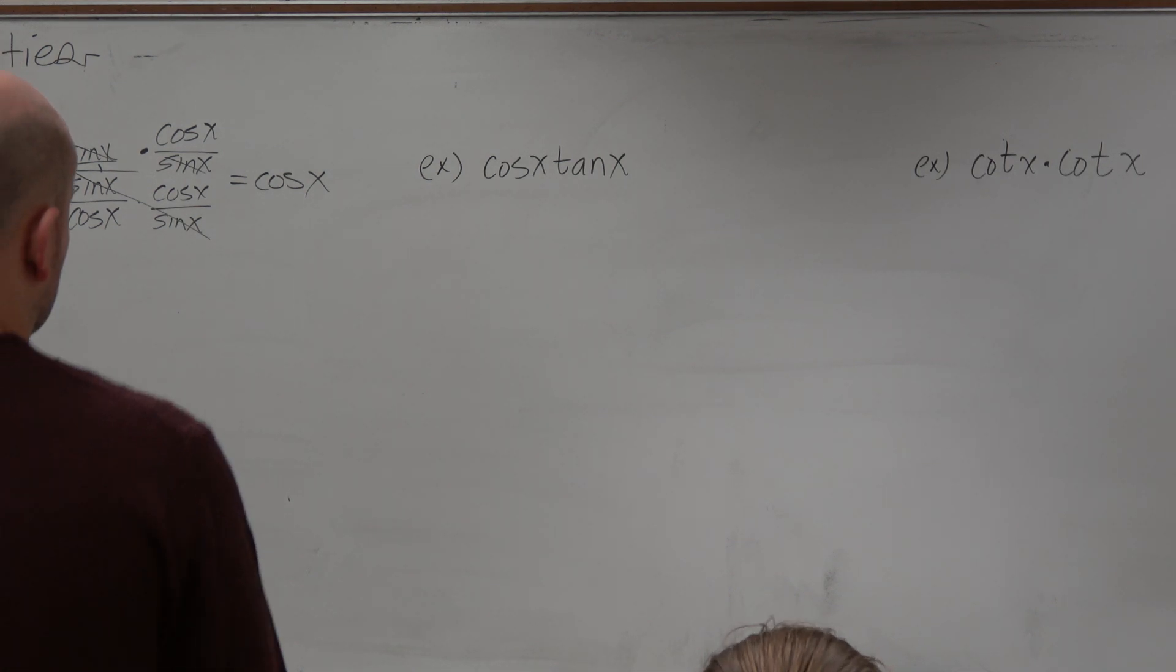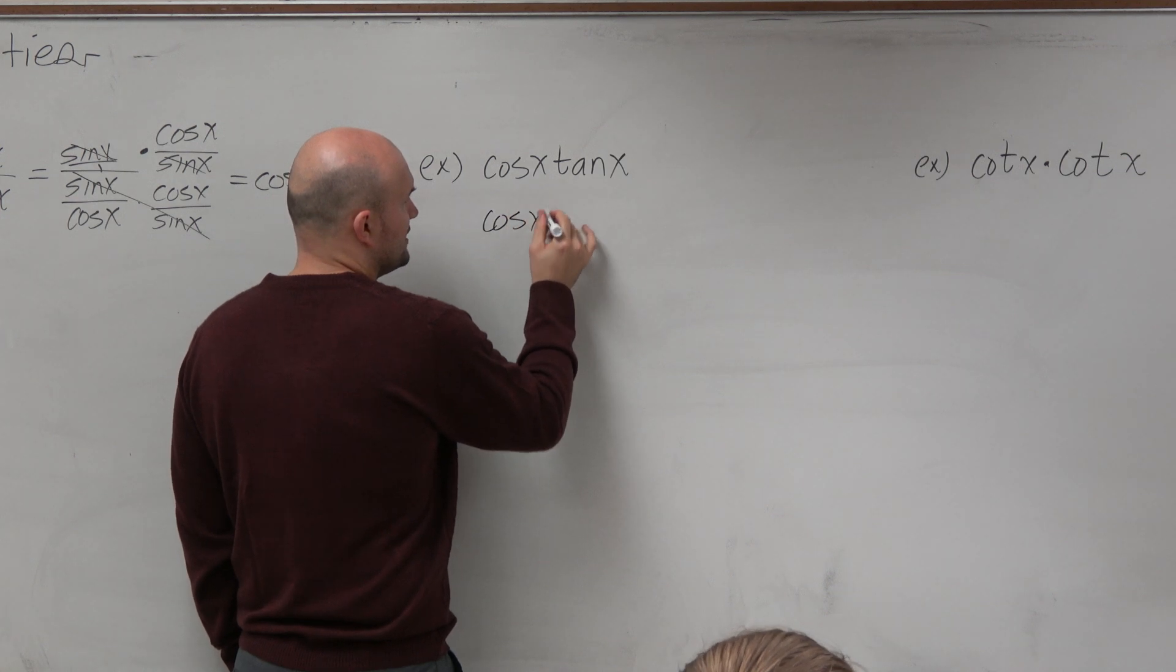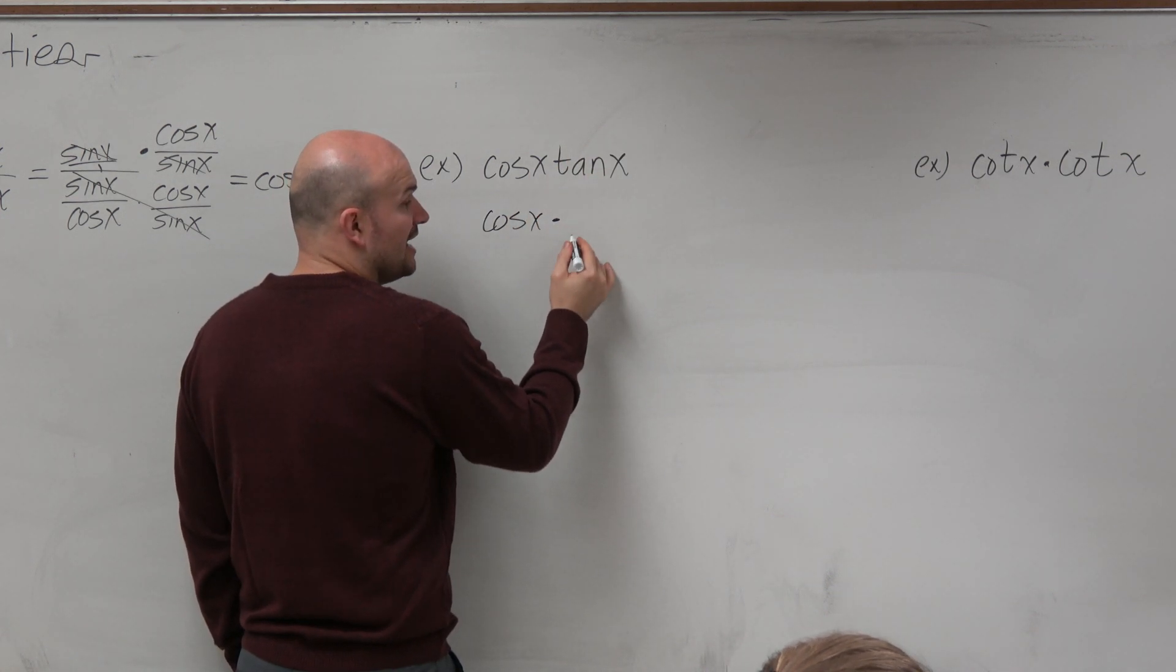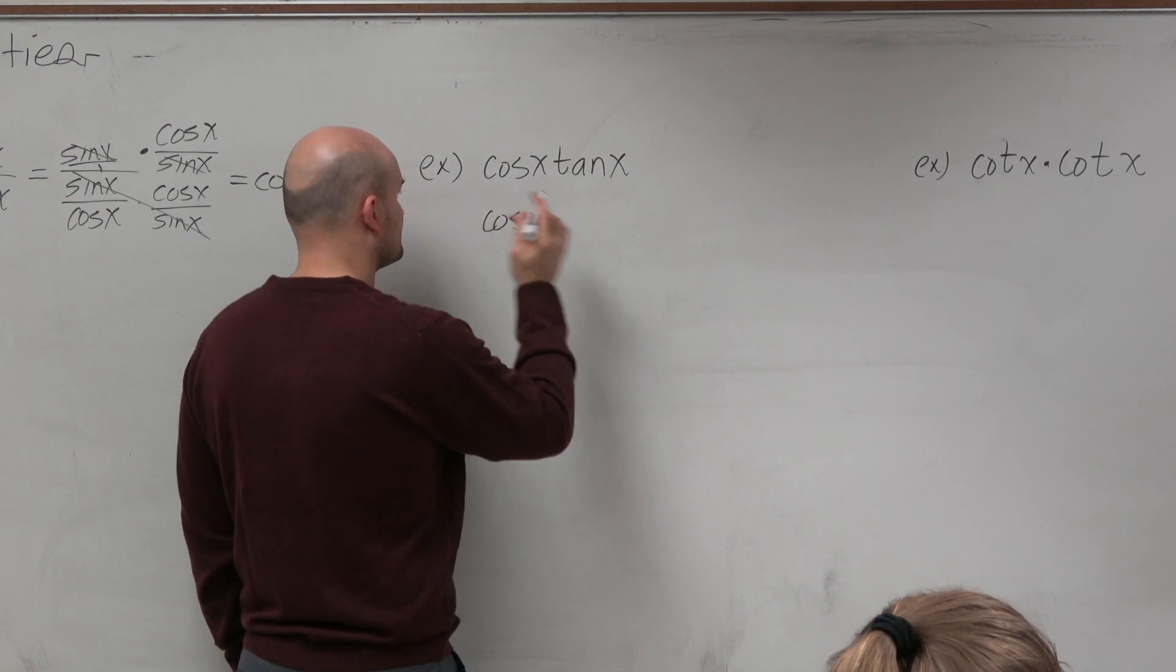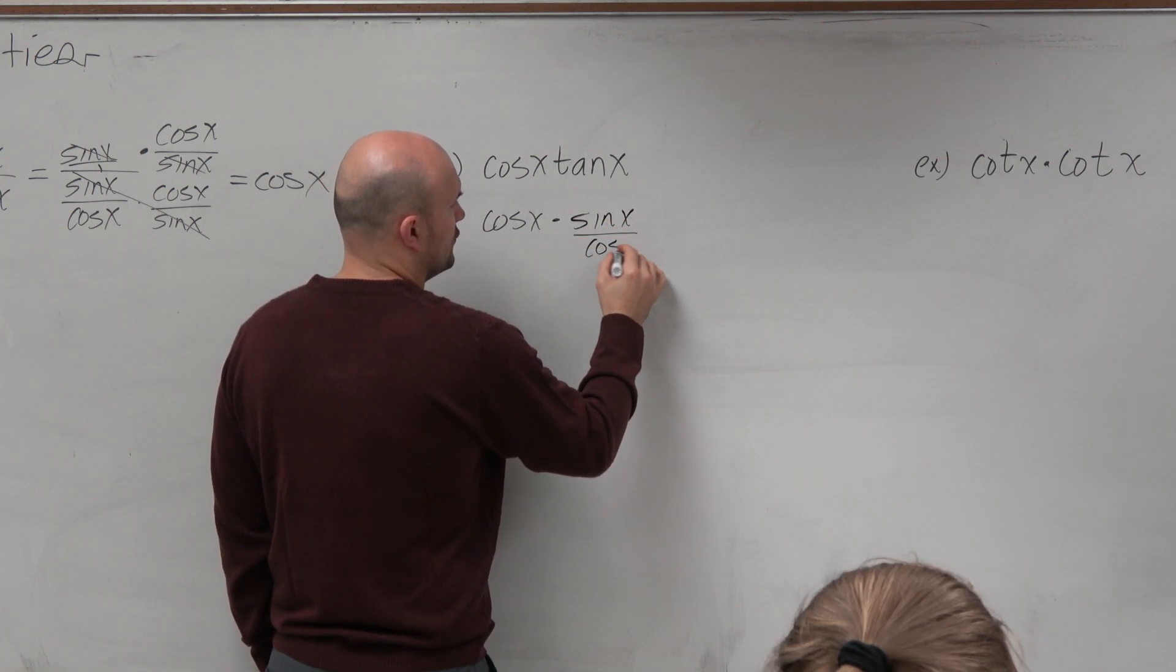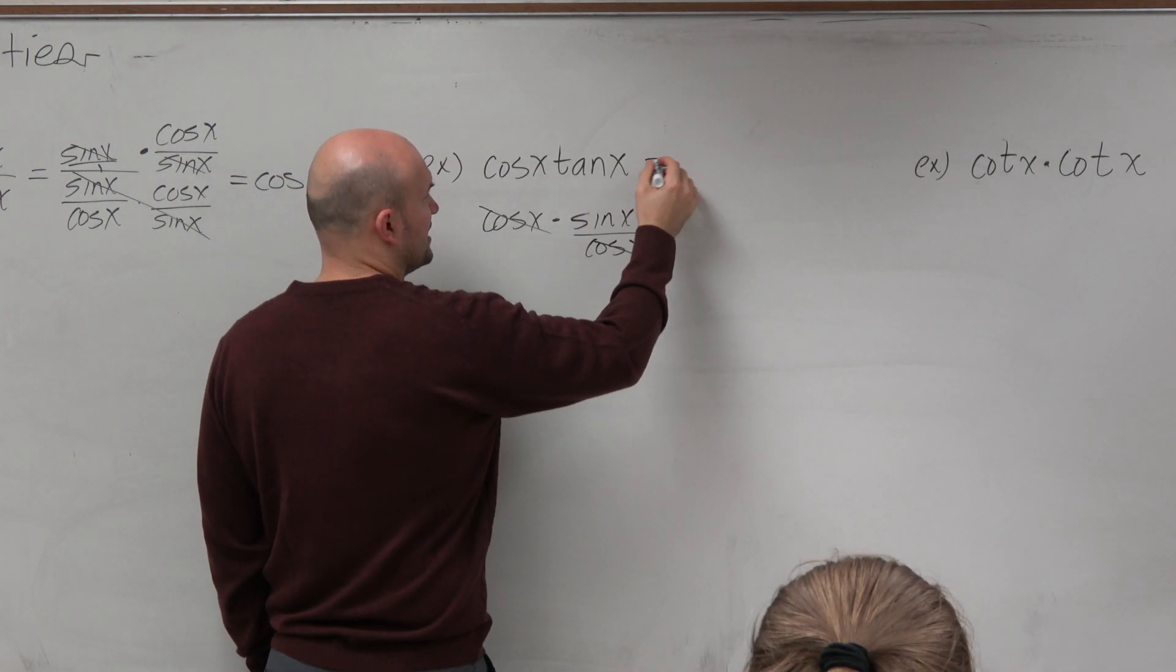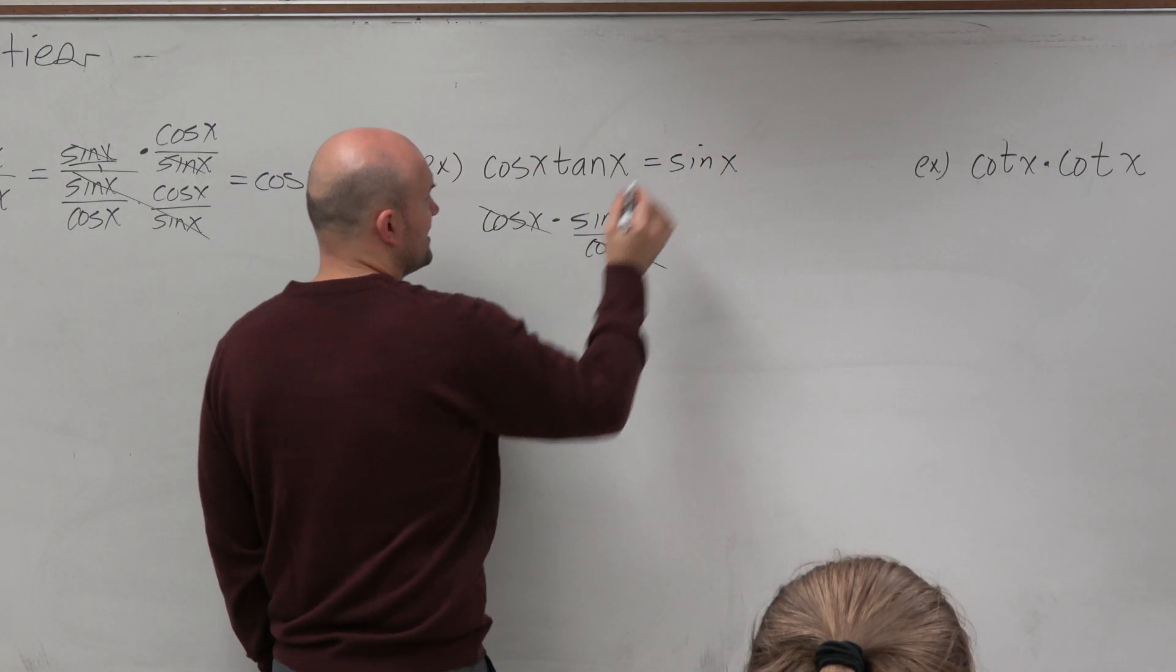Because think about the multiplication here. Cosine of x, and if I use the reciprocal identity, and then if I write this as sine of x over cosine of x, those divide out, and you can see that that is just equal to sine of x.